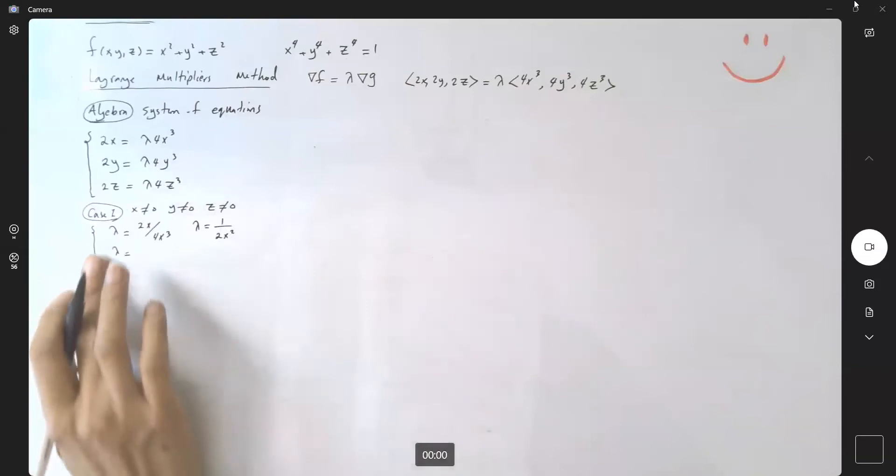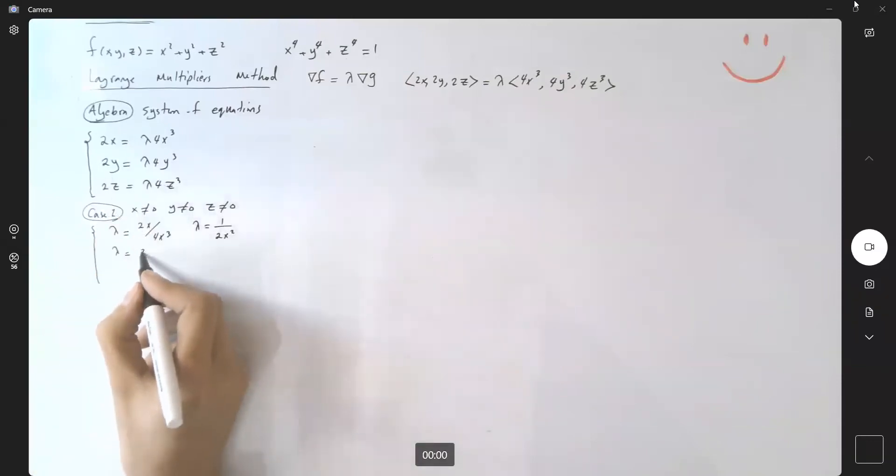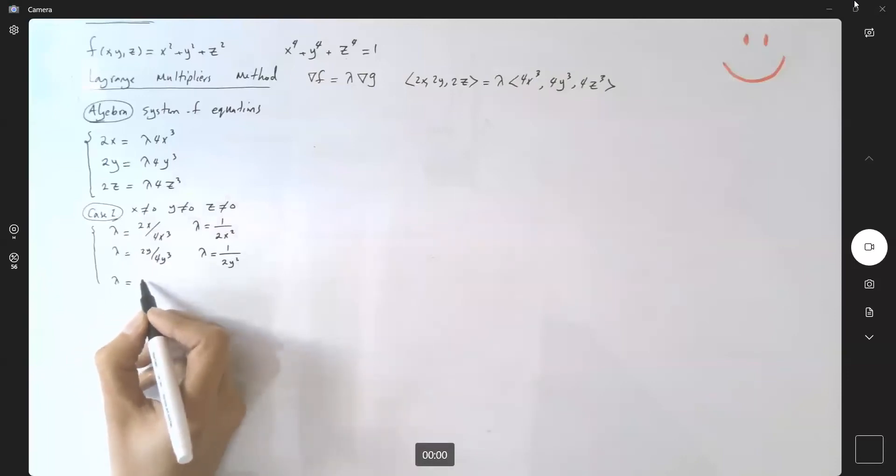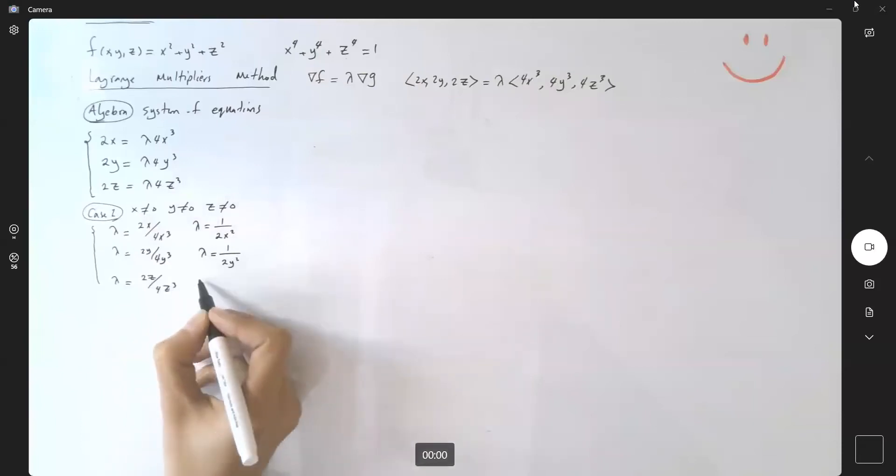The second equation gives lambda = 2y/(4y³), or lambda = 1/(2y²). The last equation gives 2z/(4z³), or lambda = 1/(2z²).